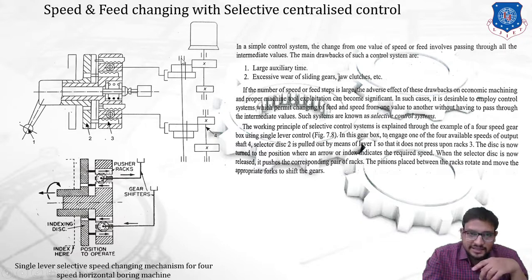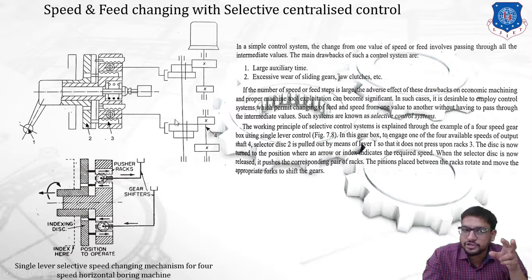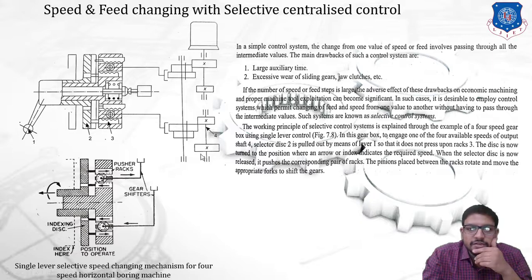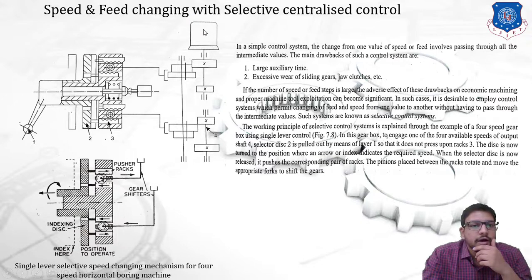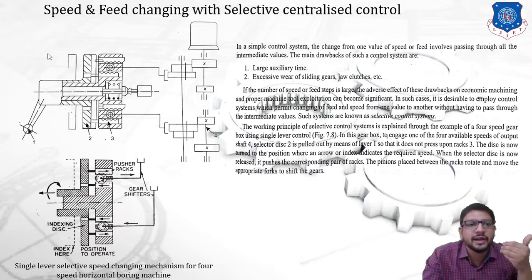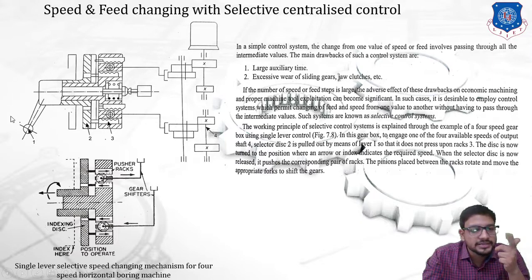On the intermediate shaft, a double cluster gear is mounted — one pair of double cluster gear and another pair. On the output shaft there are four gears mounted, which means there are four gear pairs total, making this a four-speed gearbox. This output shaft is connected with the machine tool spindle — that is our boring machine spindle. There is a lever which is operated by the operator, and with this lever we can push in and push out the indexing disk.